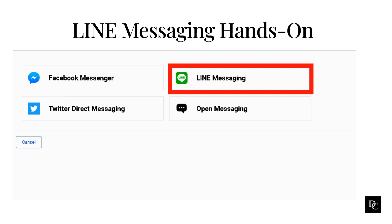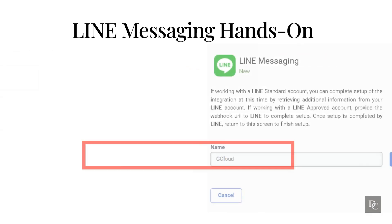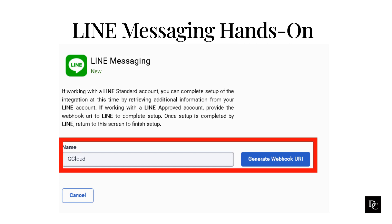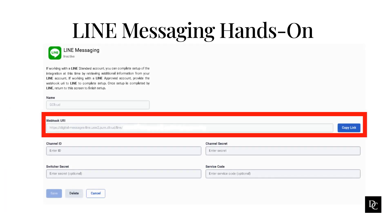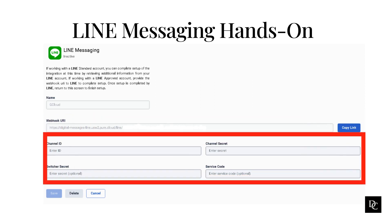Click the Line Messaging tile. The line messaging page appears. After creating the messaging API provider in the line developer's site, return to this page and enter a name for your integration. Click Generate Webhook API. After saving, Genesis Cloud will create a webhook URL. Copy the link and paste it in the line developer messaging API settings and save. From the line developer's site, gather the channel ID, channel secret, switcher secret, and service code, and enter it in the respective fields.